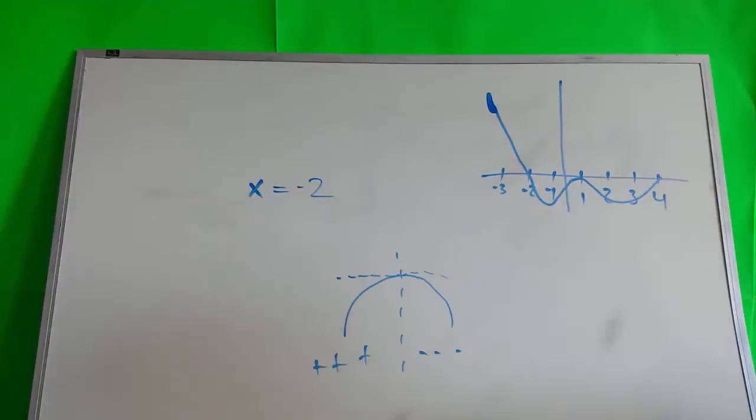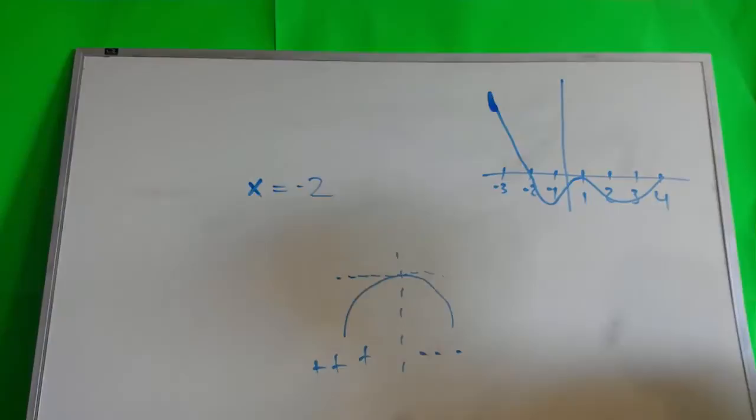Part A. Find x-coordinates at which f has a relative maximum. Give a reason for your answer. So here we got x equals negative 2. Would you like to know why?